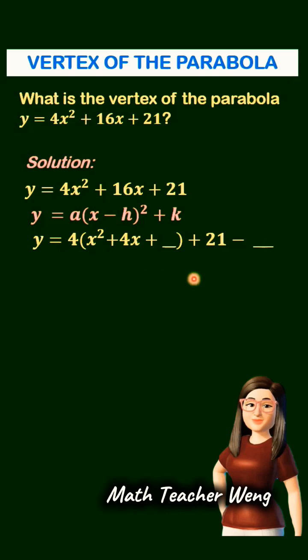We insert plus blank inside the quantity. We copy plus 21, then minus blank. We have to subtract whatever we add here.